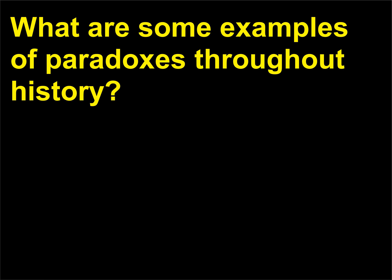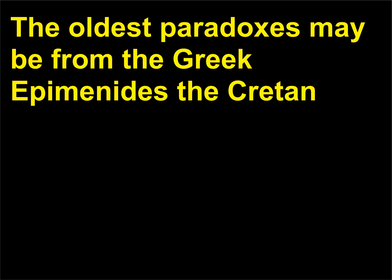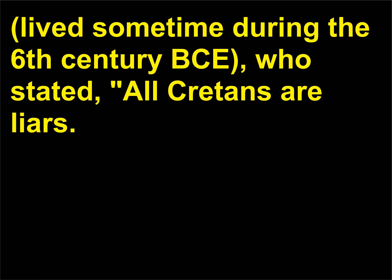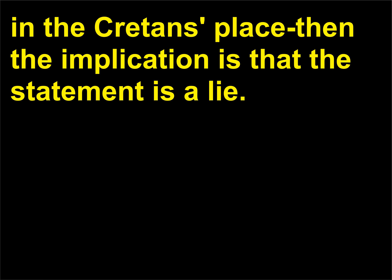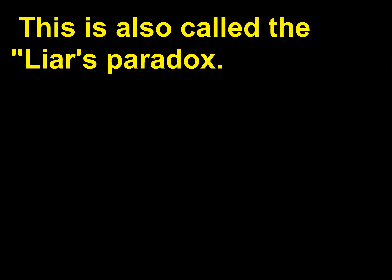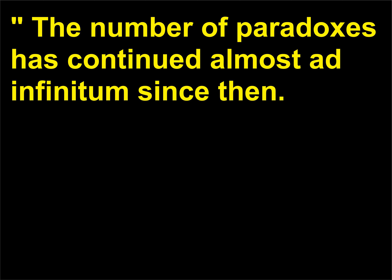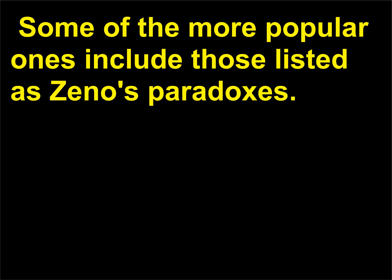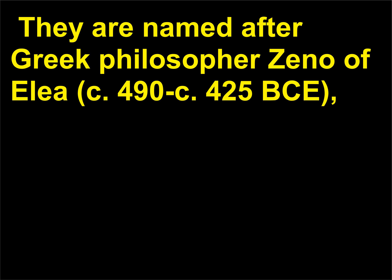What are some examples of paradoxes throughout history? The oldest paradoxes may be from the Greek Epimenides the Cretan, who lived sometime during the 6th century BCE, who stated, 'All Cretans are liars.' If this statement is true, then the implication is that the statement itself is a lie. This is also called the liar's paradox. The number of paradoxes has continued almost ad infinitum since then. Some of the more popular ones include Zeno's paradoxes, named after Greek philosopher Zeno of Elea (c. 490–c. 425 BCE).